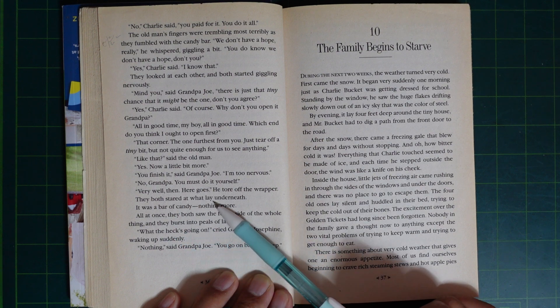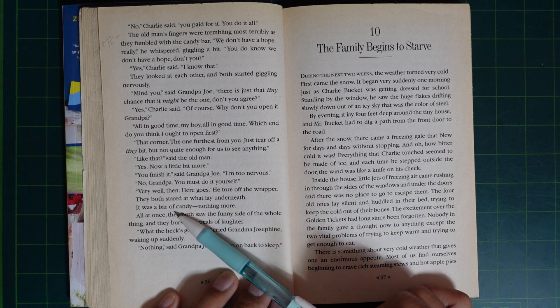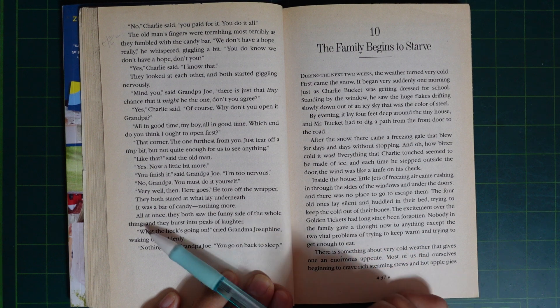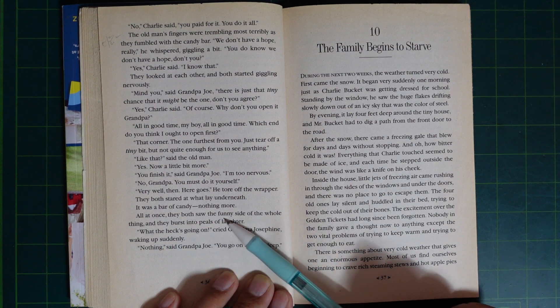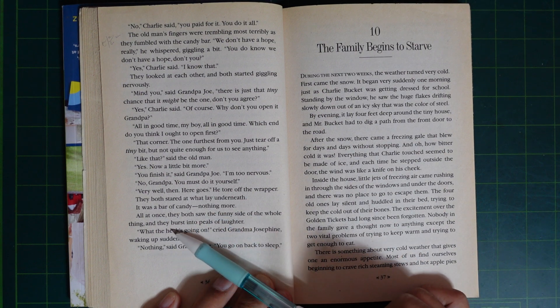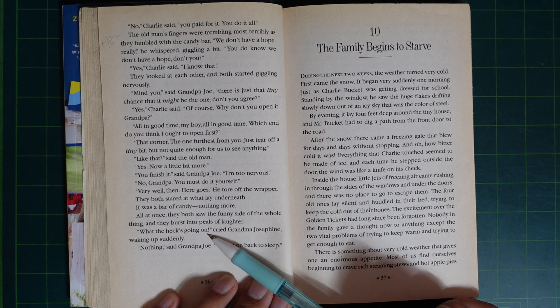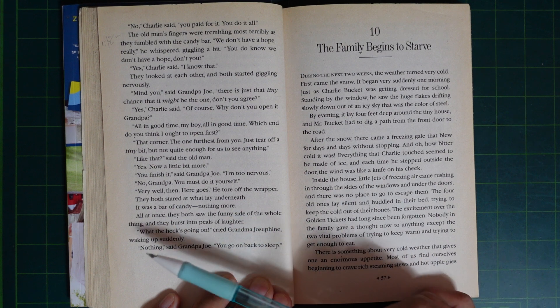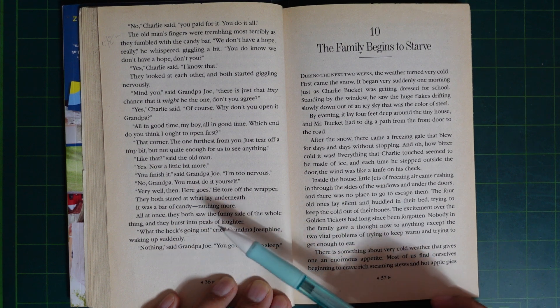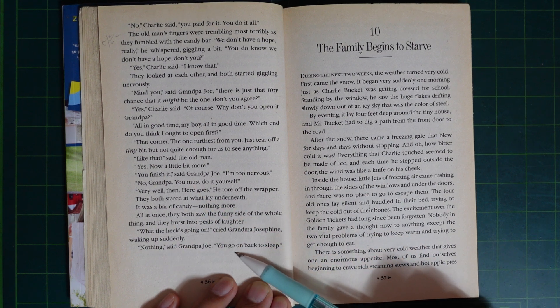They both stared at what lay underneath. It was a candy bar. Nothing more. All at once, they both saw the funny side of the whole thing, and they burst into peals of laughter. What on earth is going on? cried Grandma Josephine, waking up suddenly. Nothing, said Grandpa Joe. You go on back to sleep.